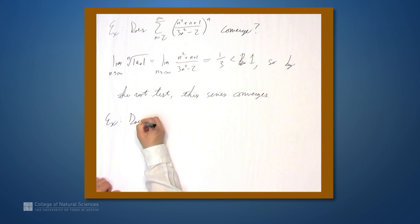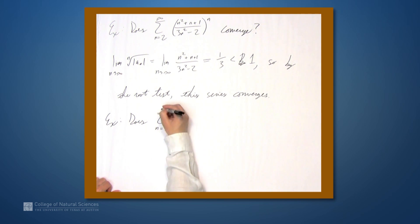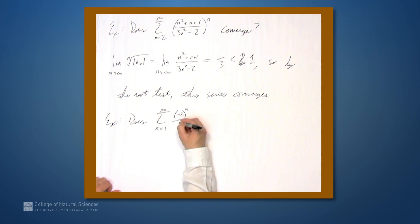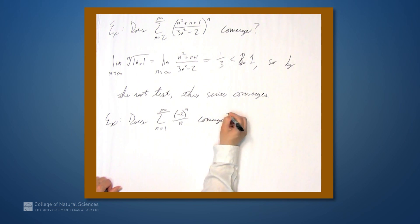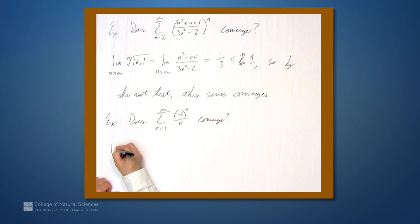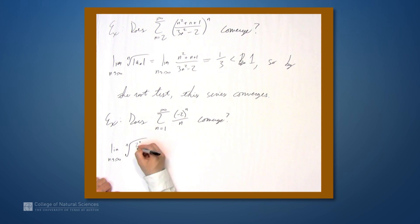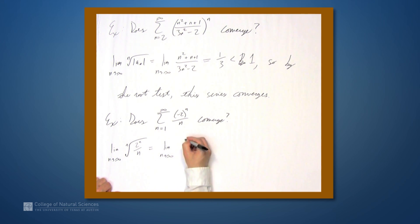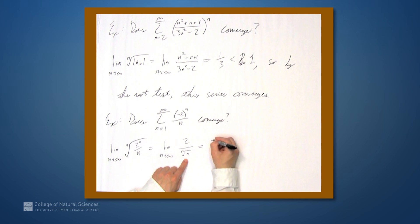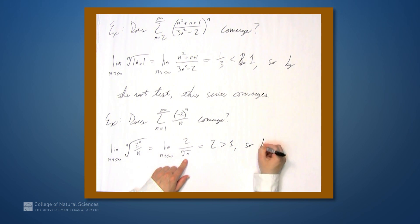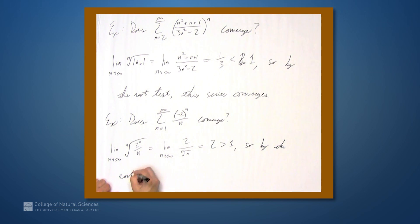Does the sum from n equals 1 to infinity of (−2)^n / n converge? We look at the limit as n approaches infinity of the nth root of the absolute value of (−2)^n / n. Taking the absolute value removes the negative, giving us 2^n / n. This equals the limit as n approaches infinity of 2 divided by the nth root of n. The nth root of n goes to 1 as n goes to infinity, so this limit is 2, which is greater than 1. By the root test, this series diverges.